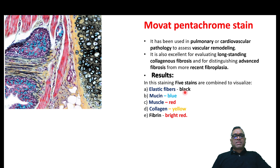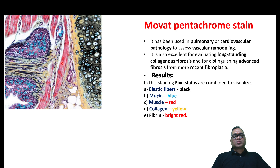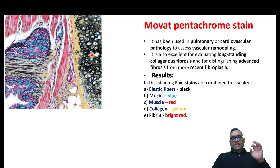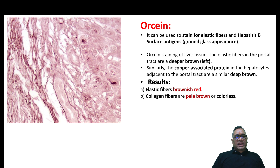In Movat's pentachrome stain: elastic fibers will be black — you can see these black colors are elastic fibers. Mucin will be blue. Muscles will be red. Collagen will appear yellow. Fibrin is bright red or dark red in color. So five components: elastic fiber (black), mucin (blue), muscles (red), collagen (yellow), and fibrin (bright red). This stain can differentiate recent fibrosis from older or advanced fibrosis.